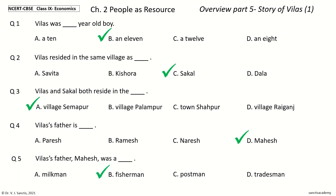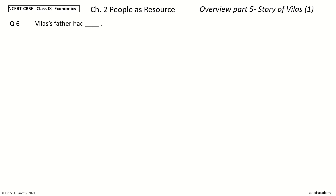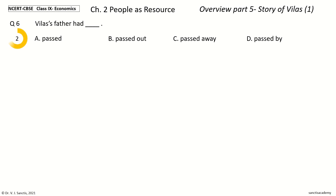And the answer is Fisherman. So Vilas's father Mahesh was a fisherman. Question 6: Vilas's father had dash. The options are: a) Passed, b) Passed Out, c) Passed Away, d) Passed By. And the answer is Passed Away. So Vilas's father had passed away.